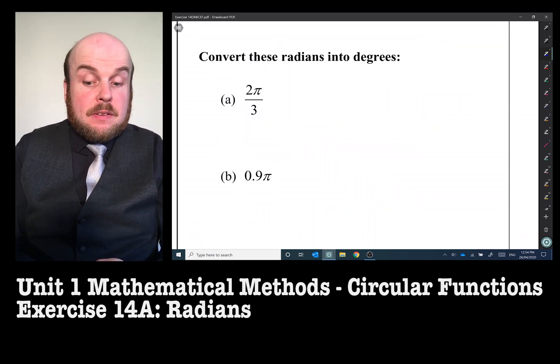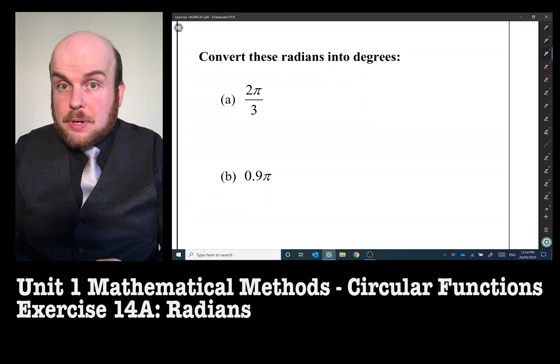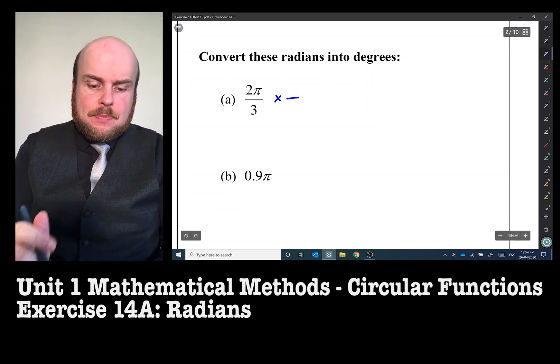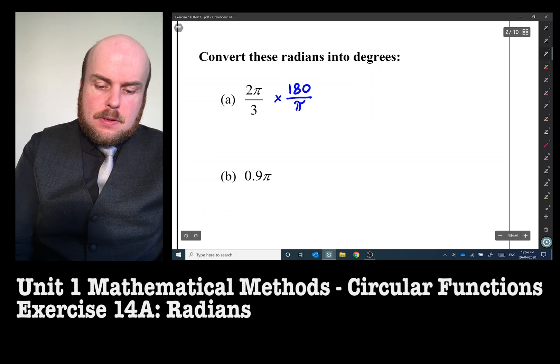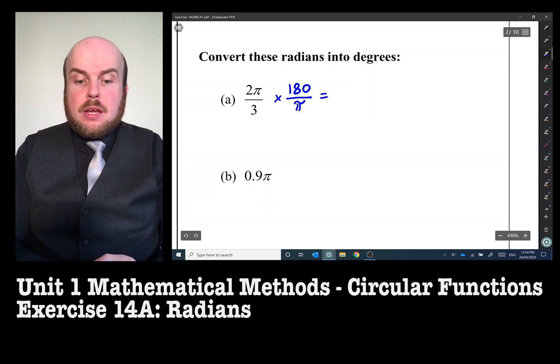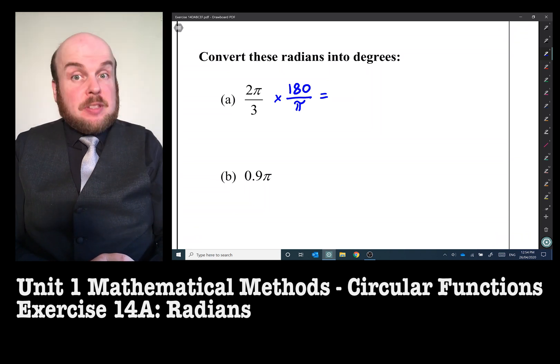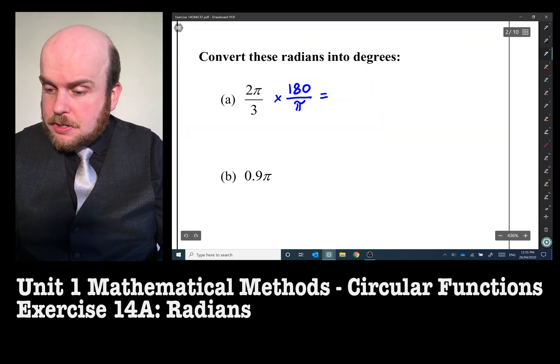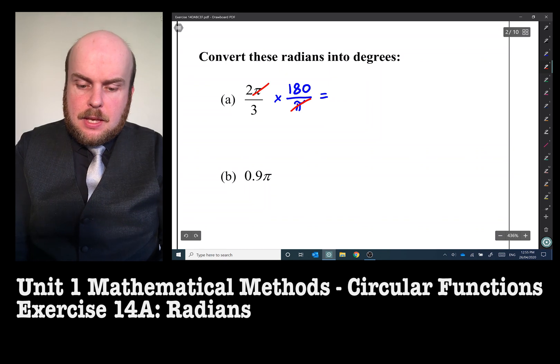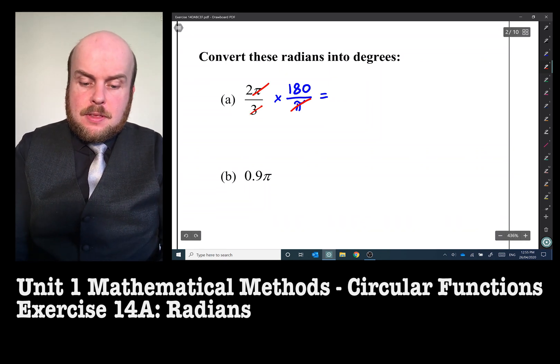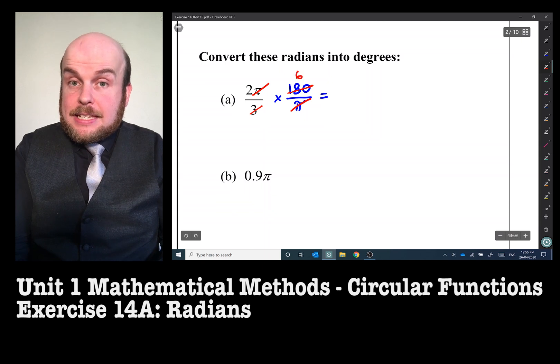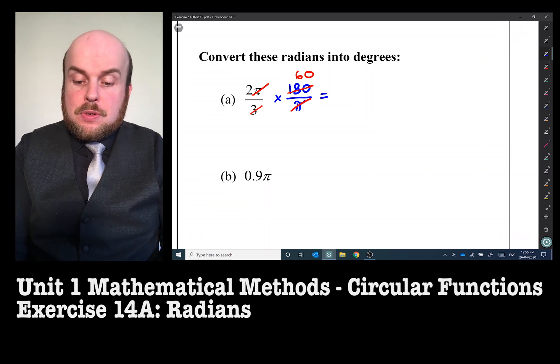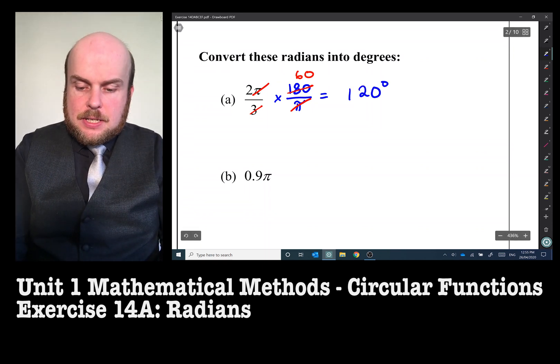Now we need to convert the radians that I've listed here into degrees. So this is where we flip that little π and 180 the other way around. 2π/3 times 180 over π. Once again I will simplify using some cross canceling. The π's will cancel out. Three goes into 180 sixty times. So therefore 2 times 60 make that 120 degrees.